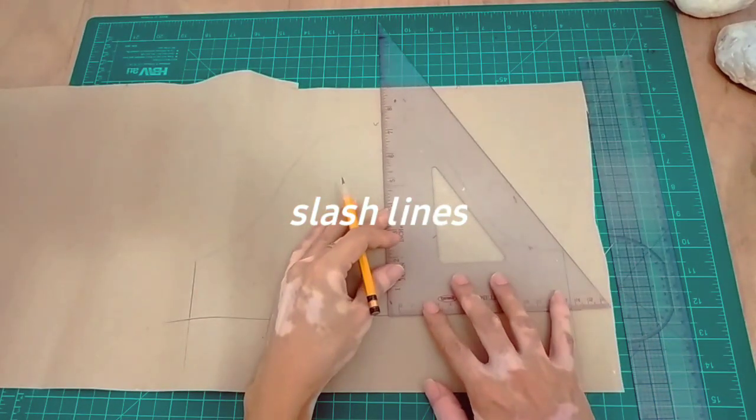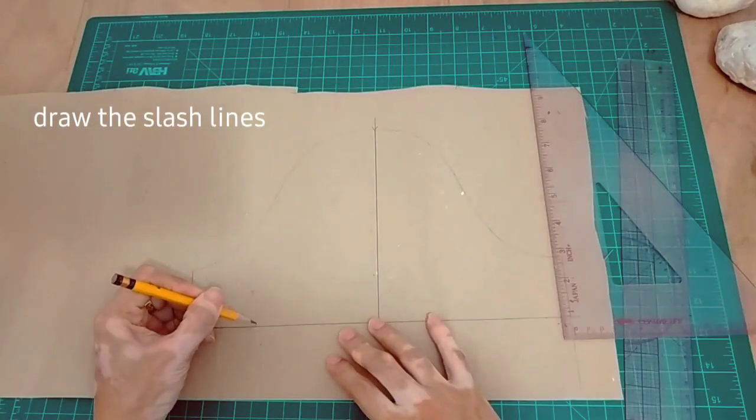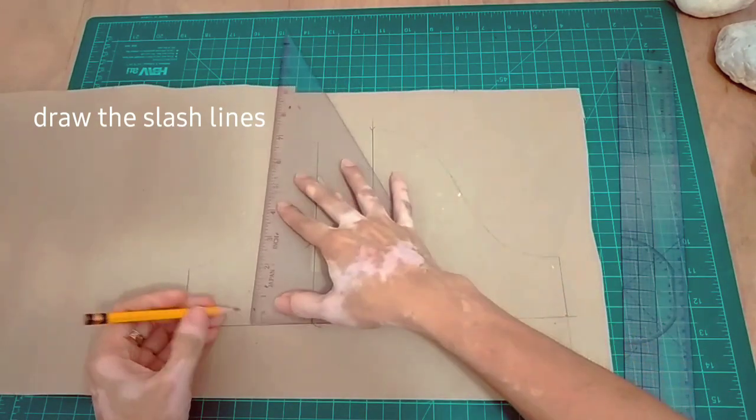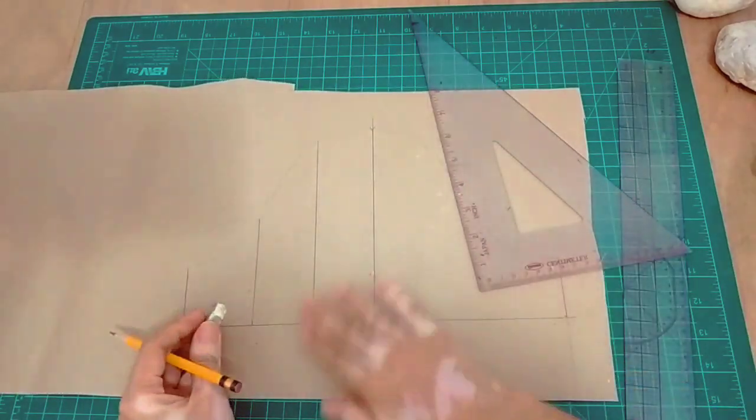Next thing to do is to draw the slash lines. So first is the center line, and then we have two slash lines inside the back and the front side of the sleeves.